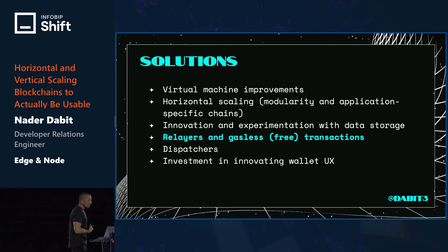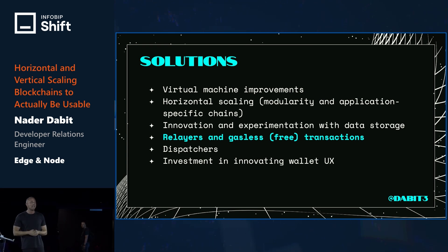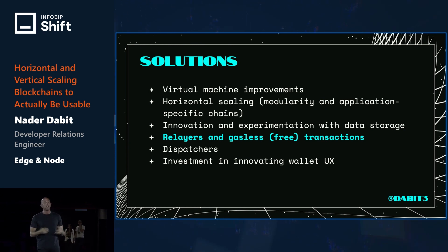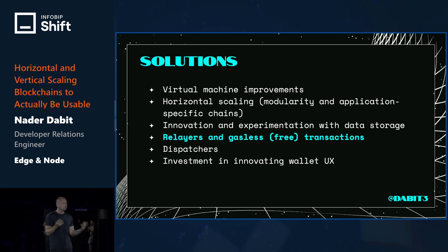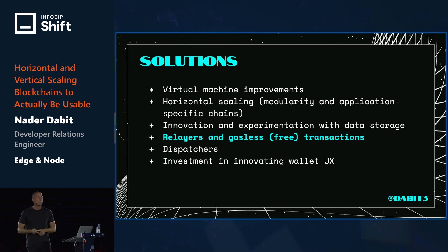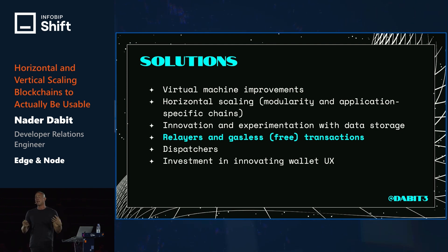This idea of relayers and gasless transactions is something we're starting to see a lot more of. Networks are now so inexpensive that it costs a fraction of a penny to interact. When we get to a fraction of a penny per transaction, we can start subsidizing those transactions, often using some type of centralized infrastructure sitting between the UI and the blockchain that also enables things like DDoS protection.